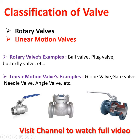Classification of valves: valves can be classified in two parts — rotary motion valves and linear motion valves. In the rotary motion valves, we give rotary motion; it is a quarter turn valve. Examples include ball valve, plug valve, and butterfly valve.